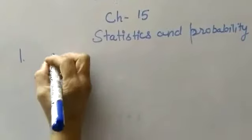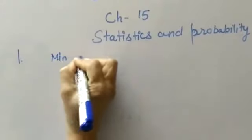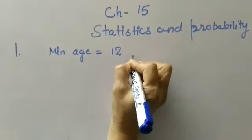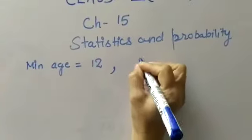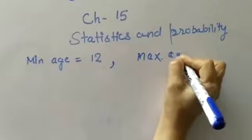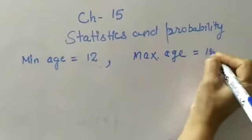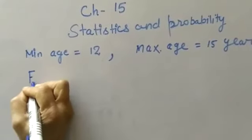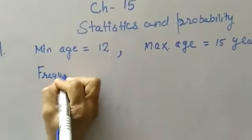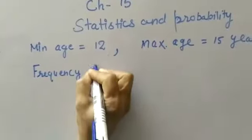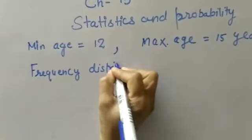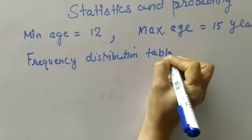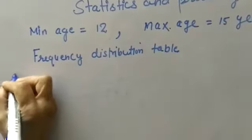First, check from the table what is the minimum age? It is 12. And in this table, what is the maximum age? That is 15 years. So let's make a frequency distribution table.